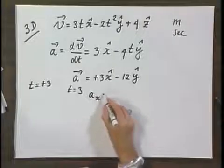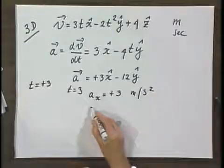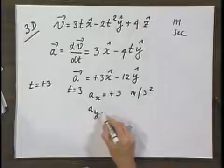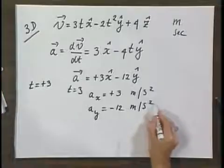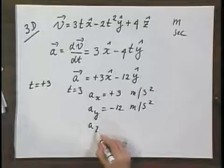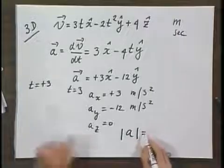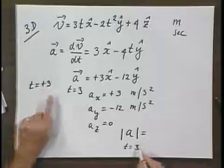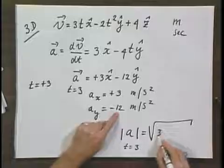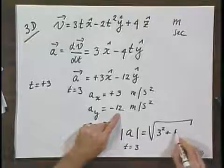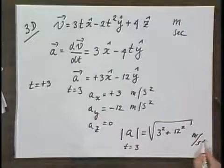So a of x equals plus 3 meters per second squared, and a of y, the y component of the acceleration, would be minus 12 meters per second squared. a of z would be 0, and the magnitude of a, at this moment in time, t equals 3, would be the square root of 3 squared plus minus 12 squared meters per second squared.